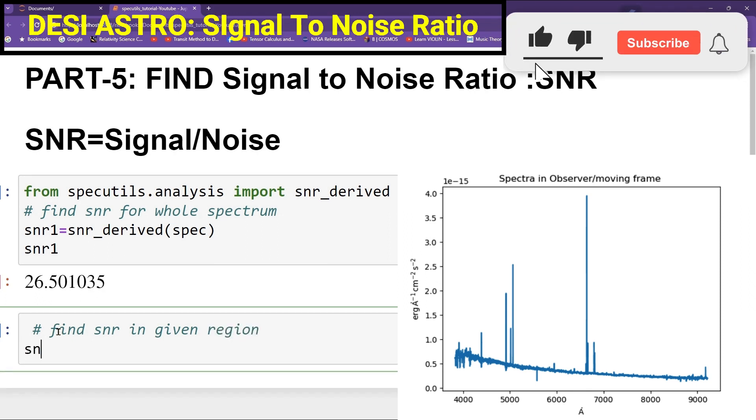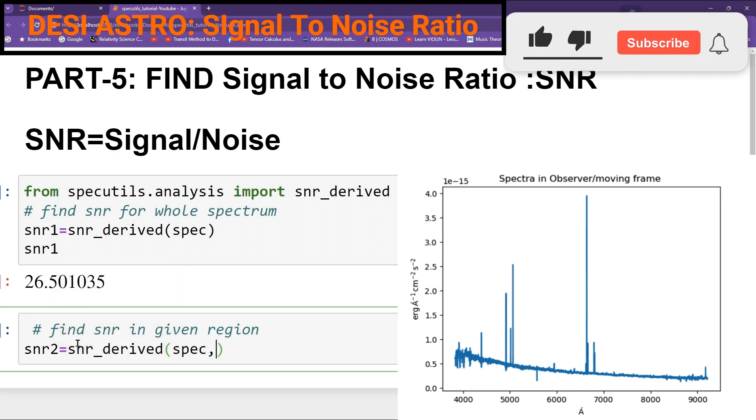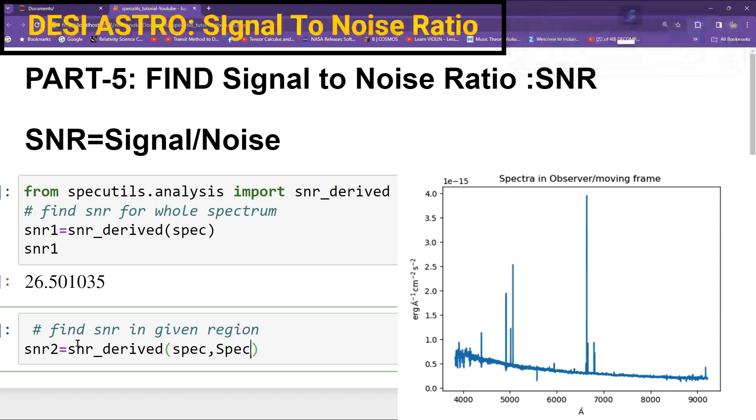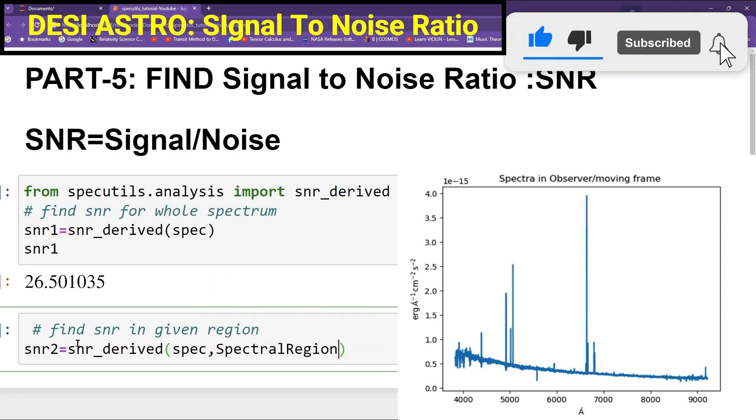snr_derived and then you can pass your Spectra and then give the region. For that type here a Spectral region.